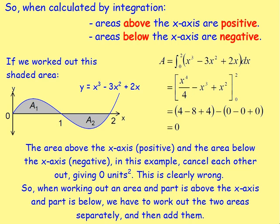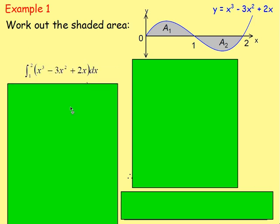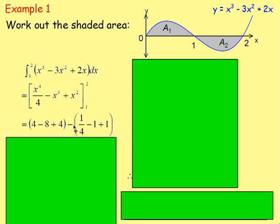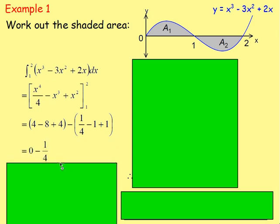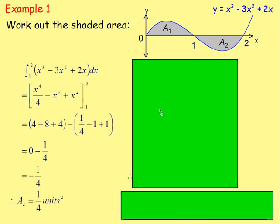Let's try that one more time. Example one: work out this shaded area. You can see part is above and part is below, so you have to work them out separately. Let's integrate x cubed minus 3x squared plus 2x — let's go with area 2 first, between 2 and 1. You get x to the power of 4 over 4, minus x cubed, plus x squared, with limits 2 and 1. Sub in the limits — you get 0 minus one quarter, which gives us minus one quarter. The area will be one quarter — ignore the negative. So the area for area 2 is one quarter.